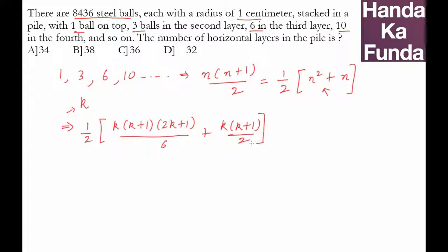Once you have that, you can take 1/2 outside, and also factor out k(k+1)/2. You'll be left with (2k+1)/3 + 1.